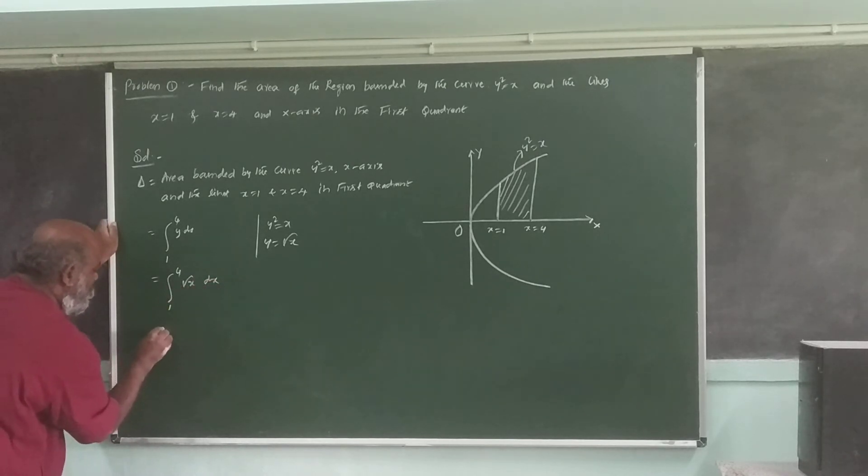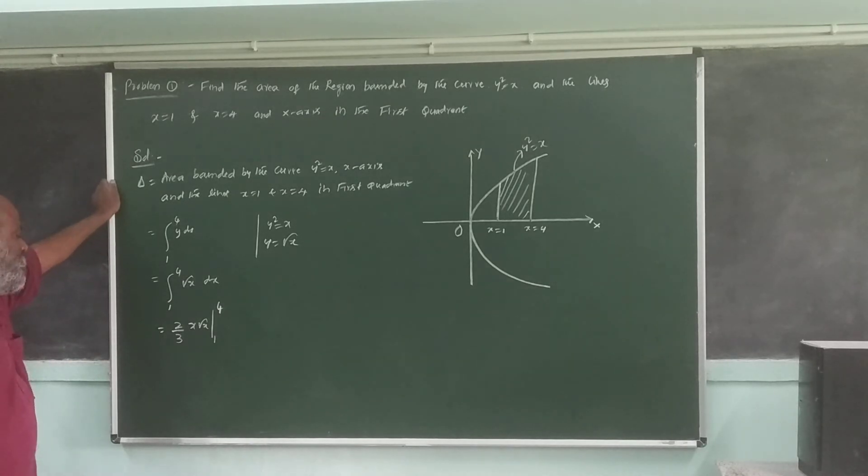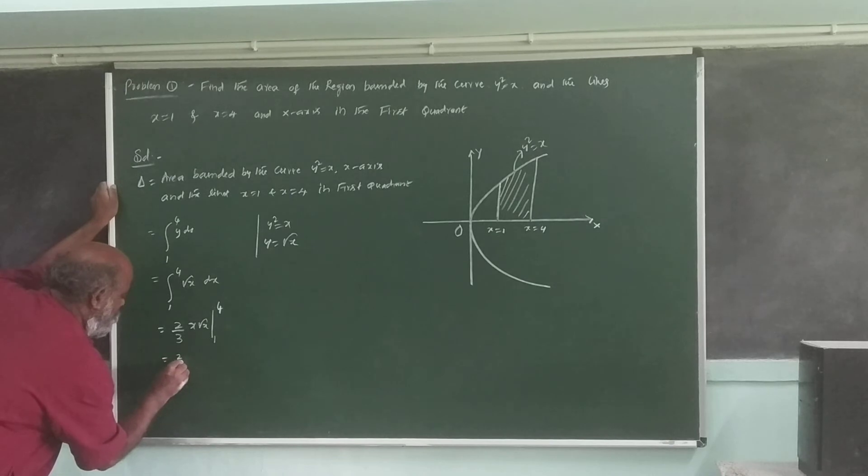Root x is 2 by 3 into x into root x from 1 to 4. That's 2 by 3 into x root x. 2 by 3 into 4 root 4 minus 1 by 3.